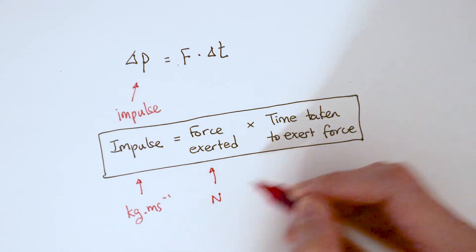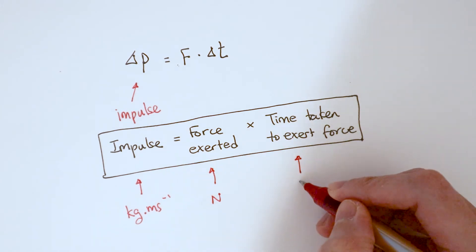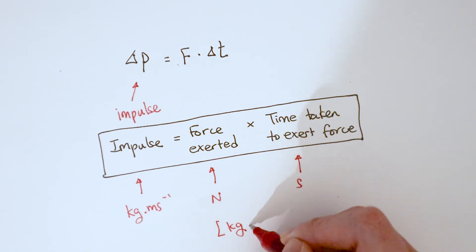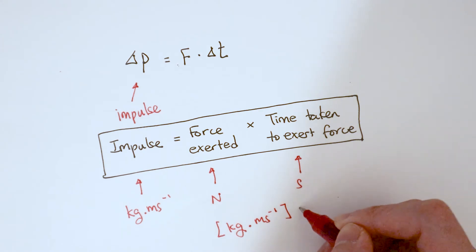On the right-hand side, we have Newton seconds. Therefore, we can equate the two sides and say that kilograms meters per second is equal to the unit Newton seconds.